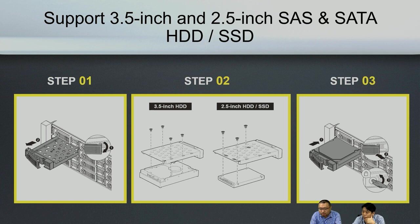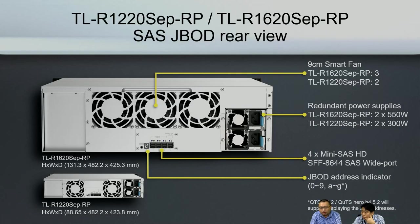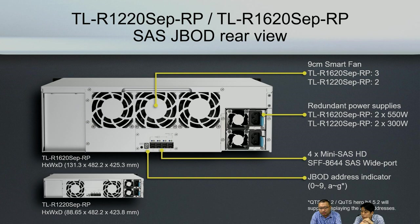The rear view is probably the most important improvement compared to the previous model. First, the number of fans: the 16-bay unit has three 9-centimeter smart fans, while the 12-bay has two. Both models have a redundant power supply — one at 550 watts and one at 300 watts. The previous generation only had three mini SAS HD ports, but this new TL SAS J-Bar gives you four mini SAS HD ports.